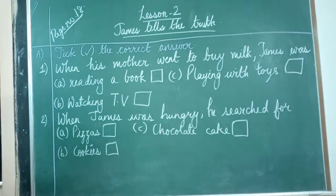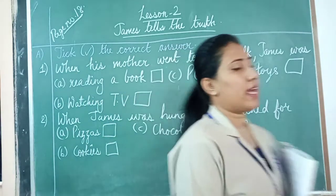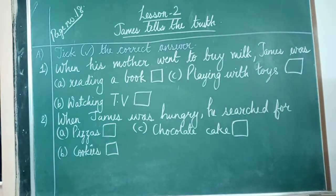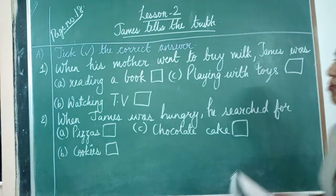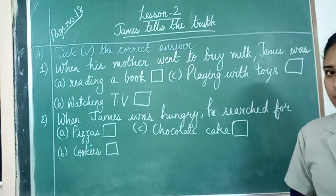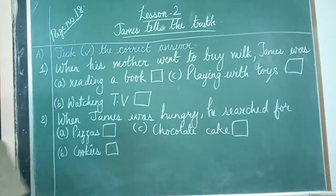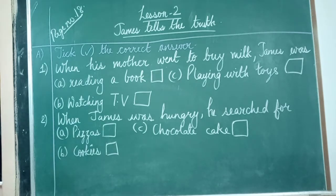In this question, what you have to do is read the question first, then see the three options given and select the right one. First read the question, then look at the three options given, and put a tick in the box next to the correct option — in your textbook, that is your semester 2 book. Solve all the questions in the same way.